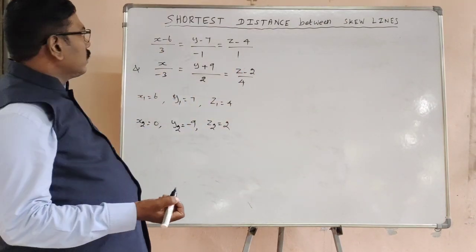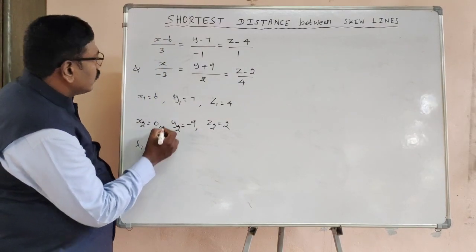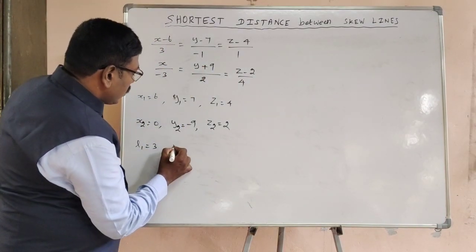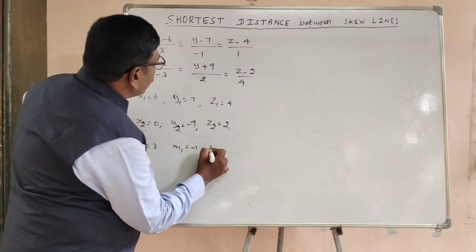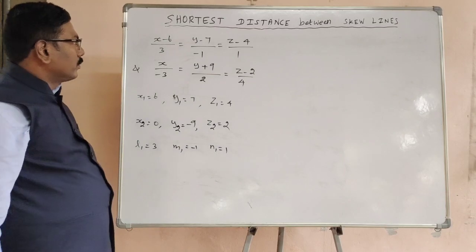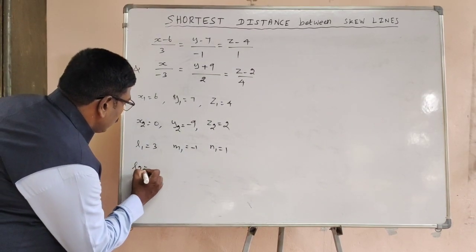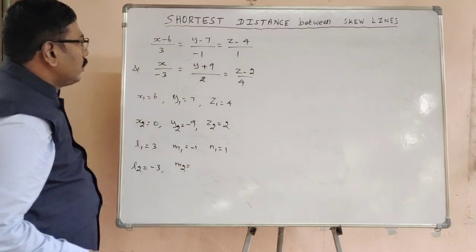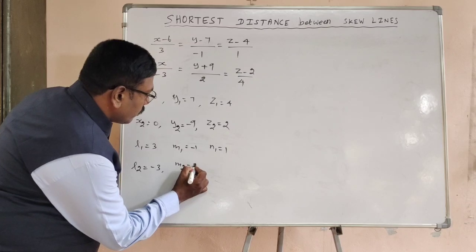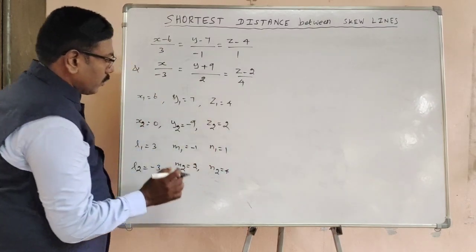In similar way, we can write L1, M1, N1, etc. L1 is equal to 3, M1 equal to minus 1, and N1 equal to 1. Now for the second line, L2 equal to minus 3, M2 equal to 2, and N2 equal to 4.